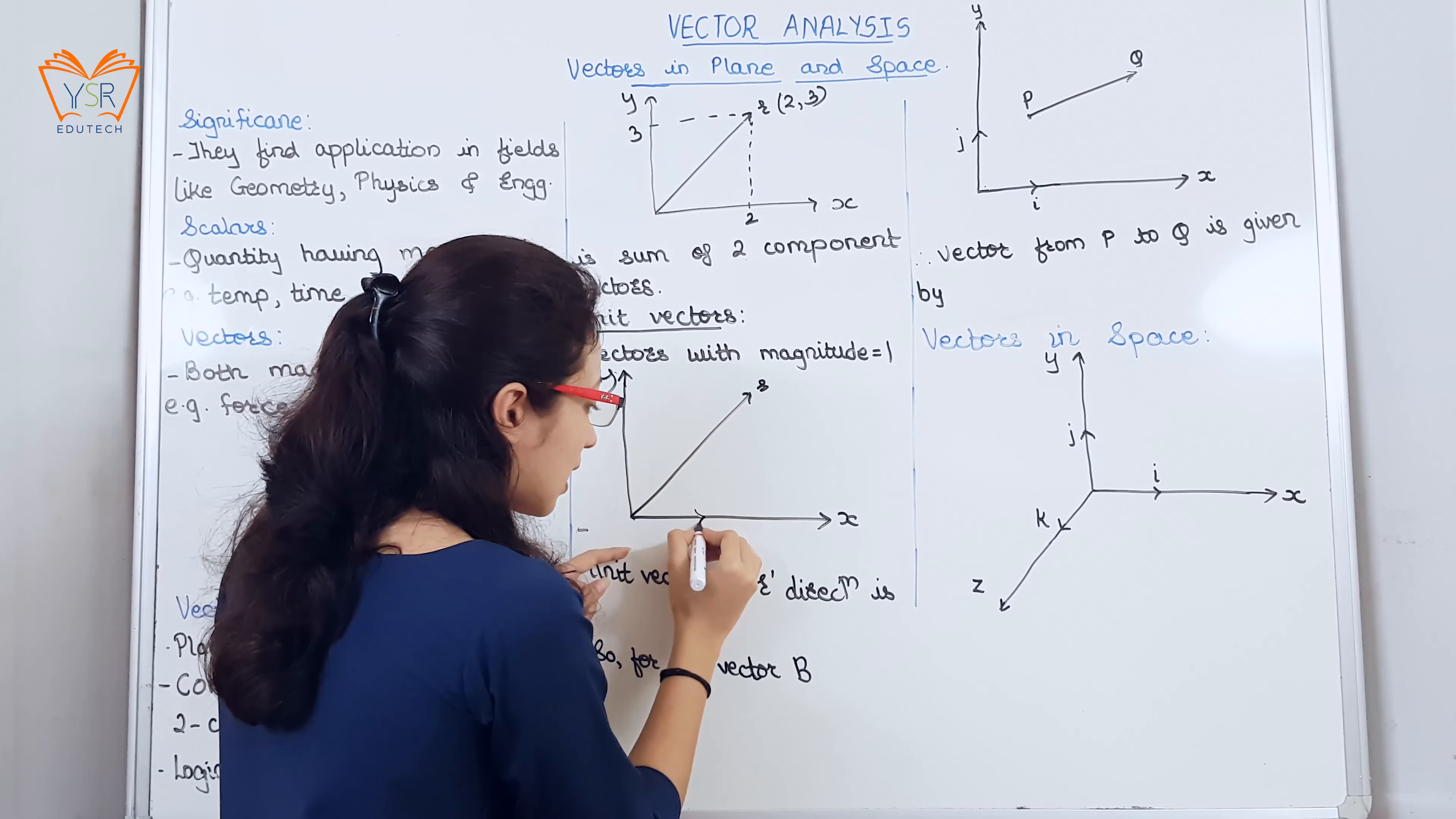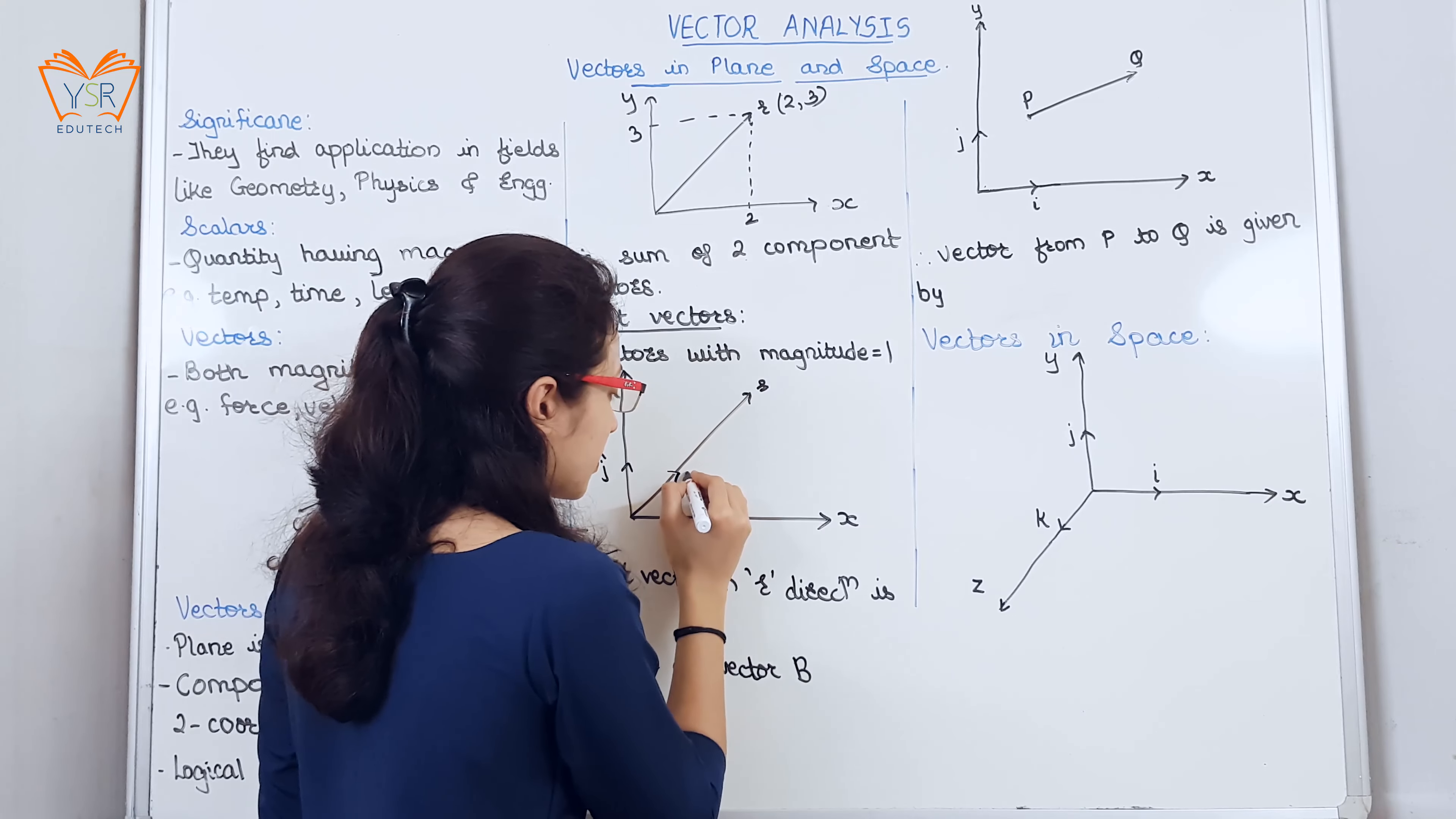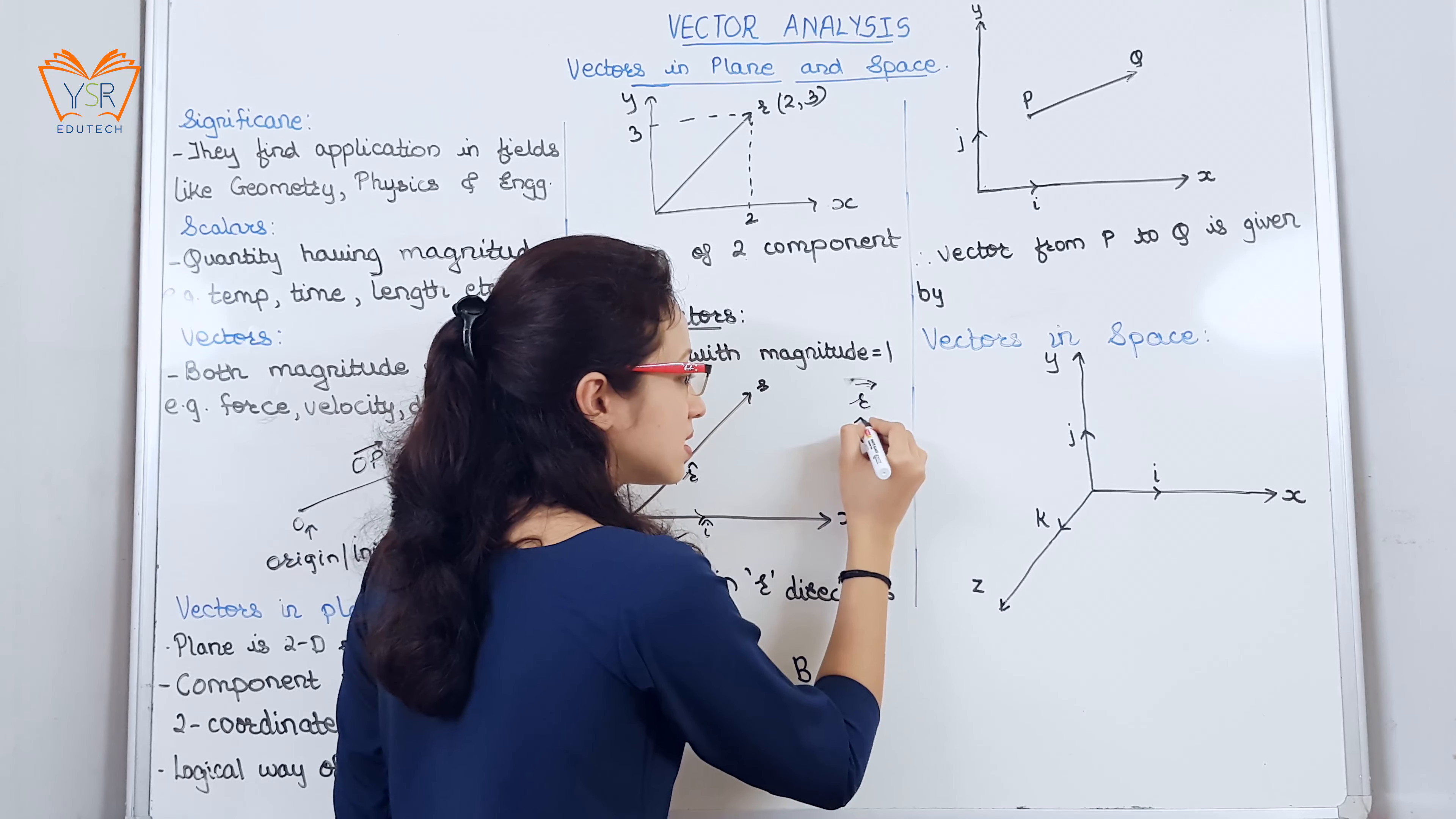Let i be the unit vector lying along the coordinate axis x, j be the unit vector lying along the coordinate axis y and r cap be the unit vector along r. Please note, this is the vector r and this is the unit vector.